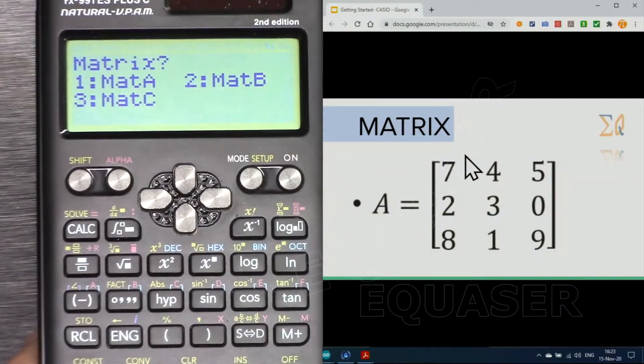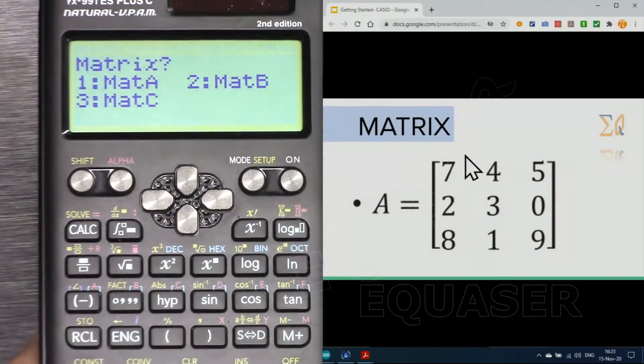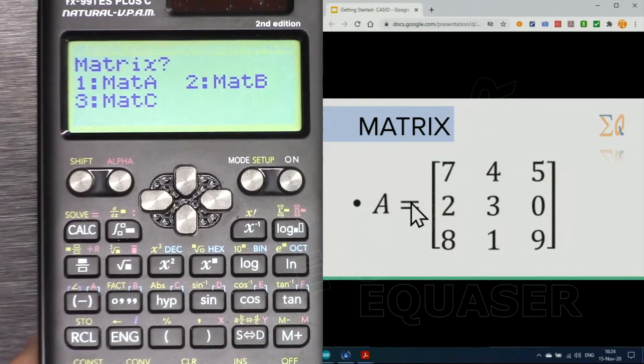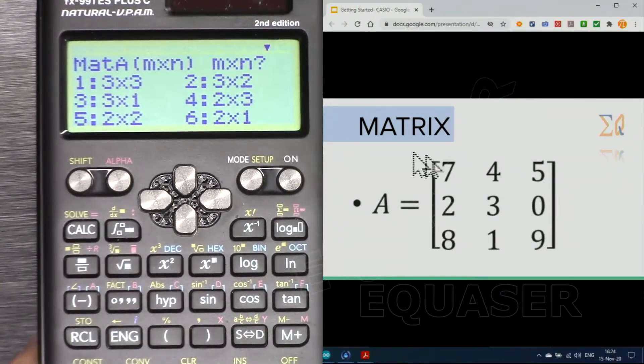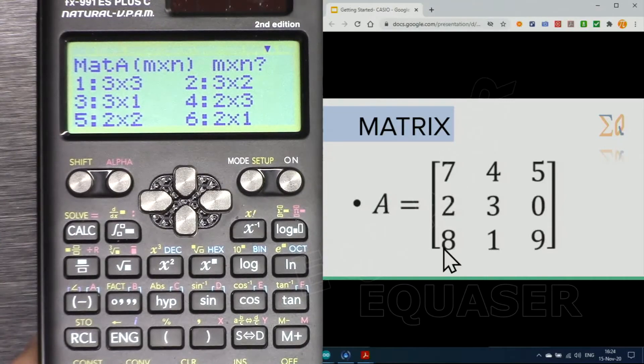Press shift matrix and here it says what is the dimension. Press 1 and it says which matrix we want to store this in. Matrix A, press 1, and it says what is the dimension: 3 rows by 3 columns, so 3 by 3.